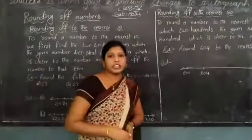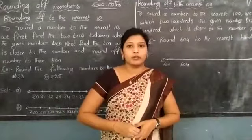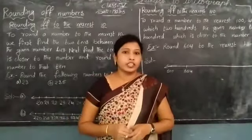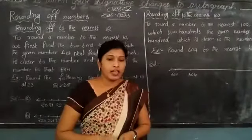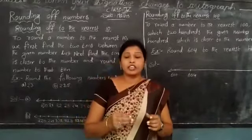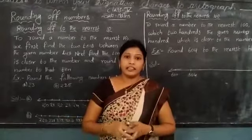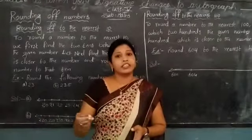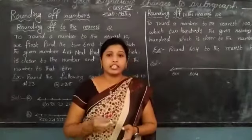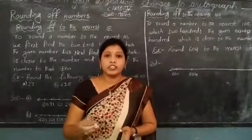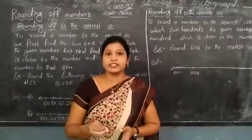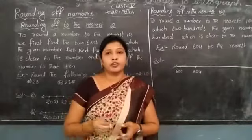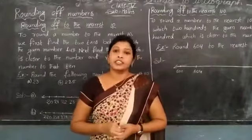For example, Tina's house is 12 kilometers from her school. She says that her school is about 10 kilometers from her home, and she rounded off 12 kilometers to 10. Another example: the distance between Rohit's home and school is 17 kilometers, but Rohit says that his school is about 20 kilometers from his home. Here, Rohit also rounded the 17 kilometers to 20 kilometers.